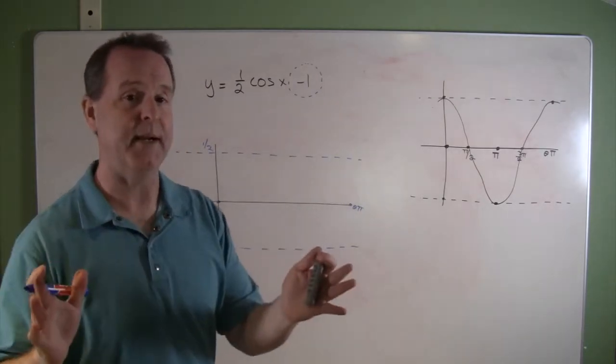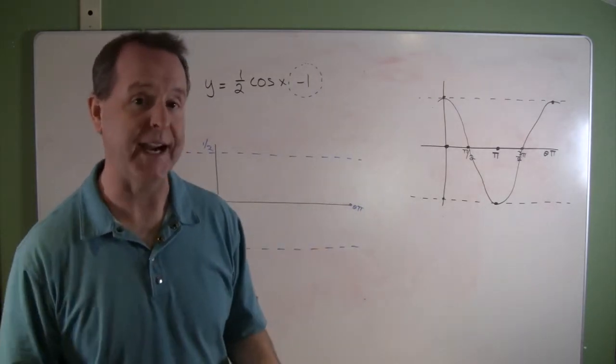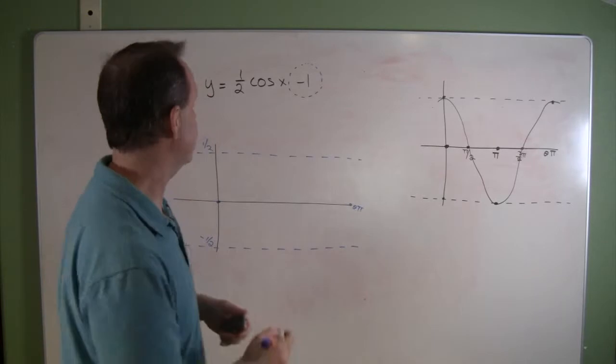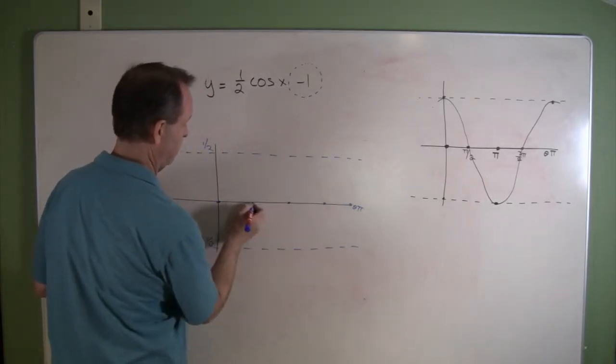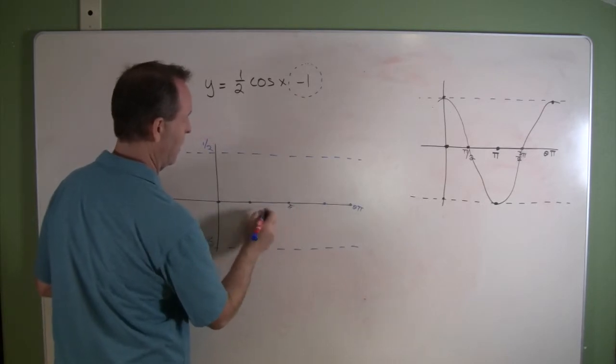We know that we want to take its period and divide it into four equal sections because every section, something unique is happening. So let's divide it into four sections. And we label those if we want.